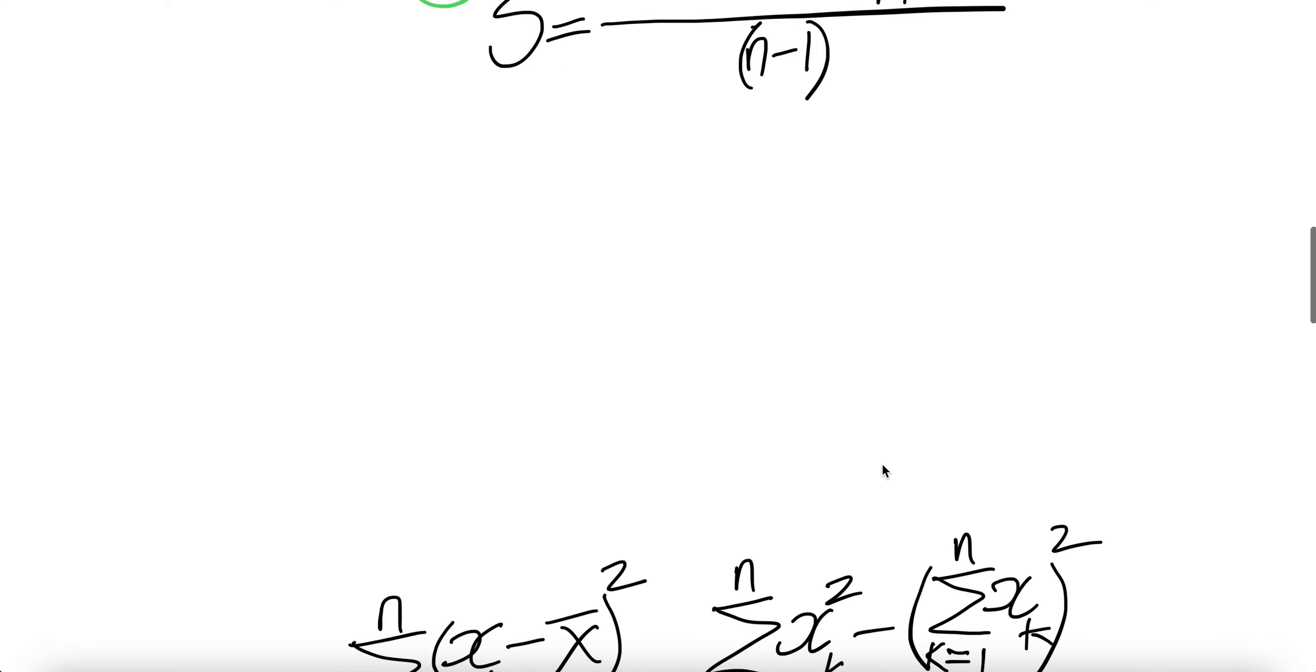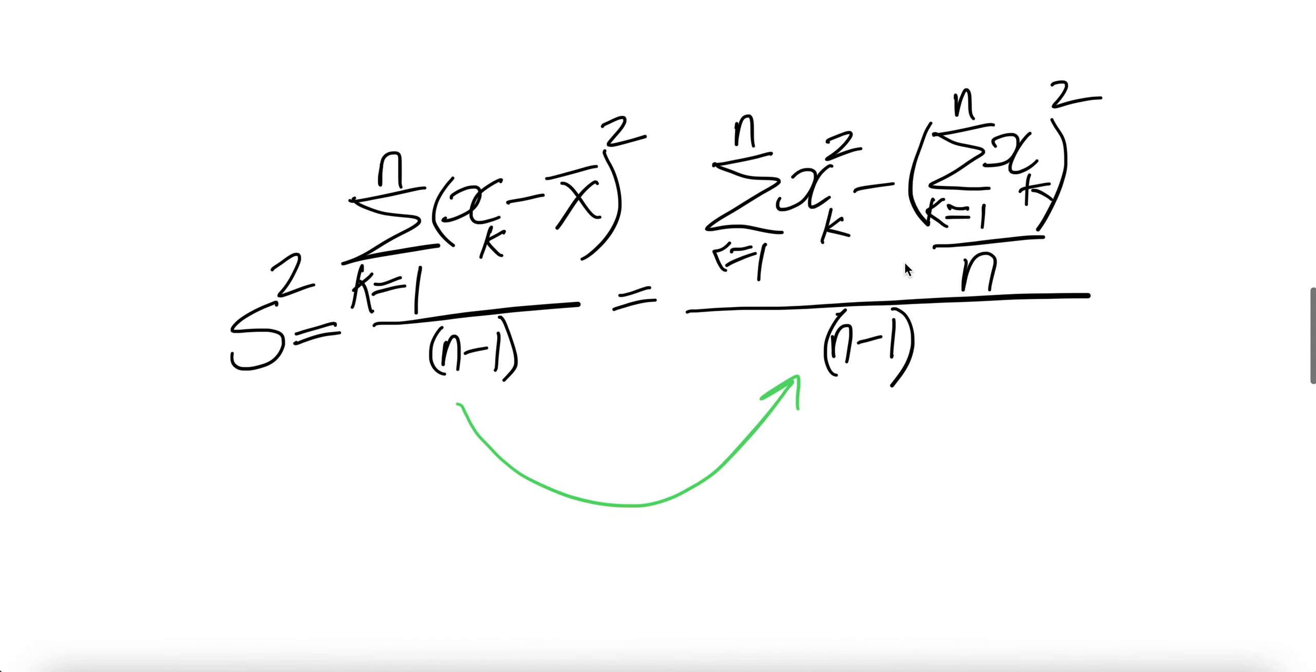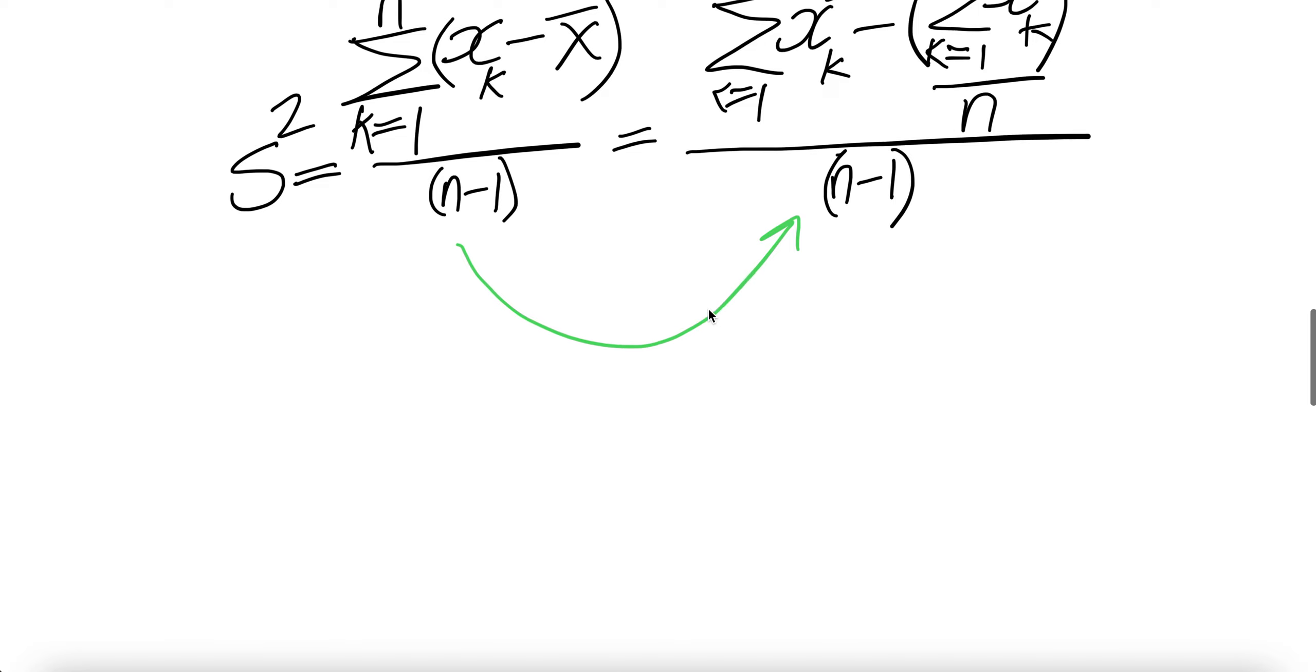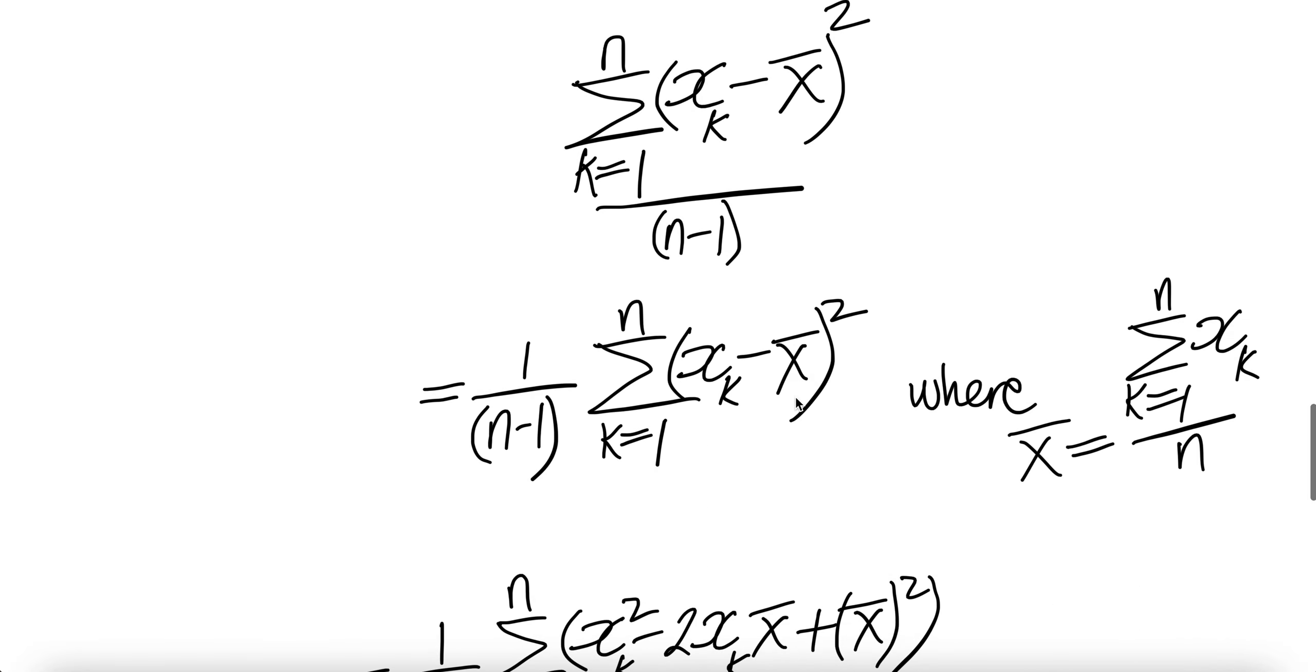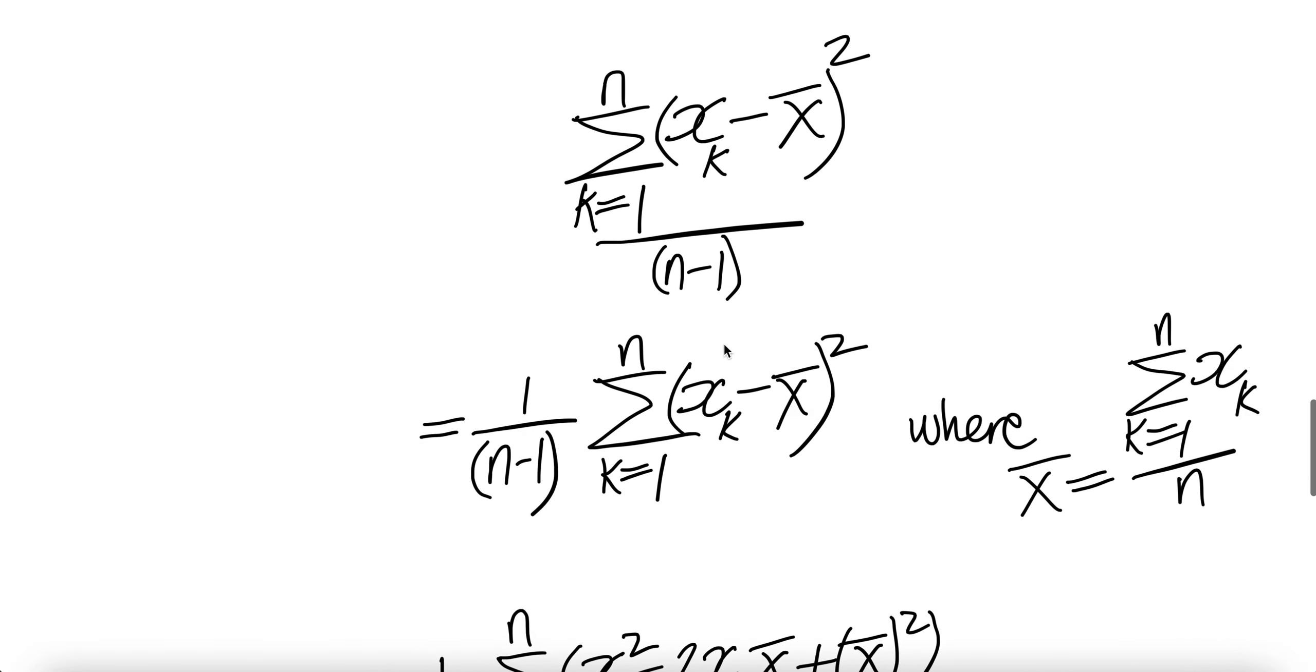Okay. So we're going to start from the left, show that it's equal to the right. Here's the left-hand side. As a note, we put 1 over n minus 1 out here. And then this one is the sum of the n observations divided by n.